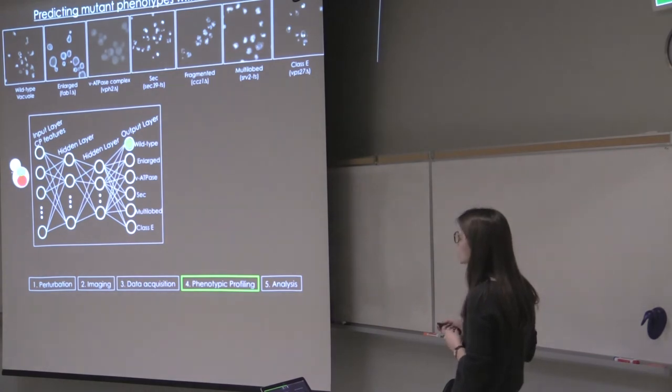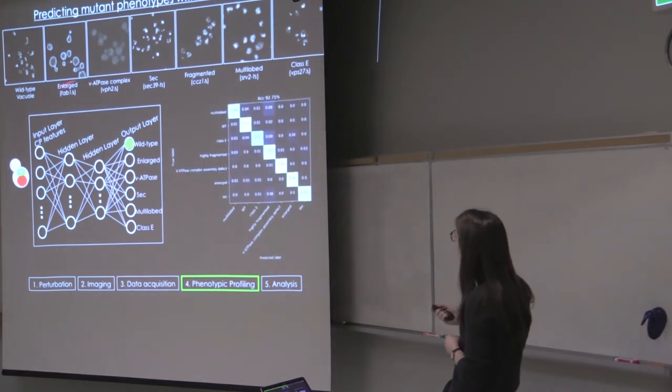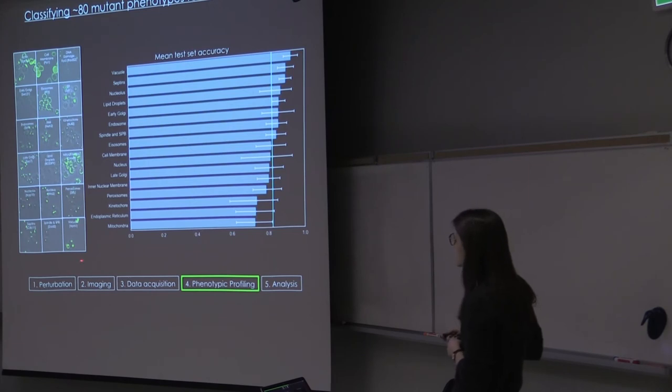And for each cell, we're then asking what's the maximum probability, which class gives us the maximum probability to do the prediction. And for that, for this example compartment, we can achieve really high accuracies through this method. We've applied this to all of the compartments that we have through cell profiler features again.